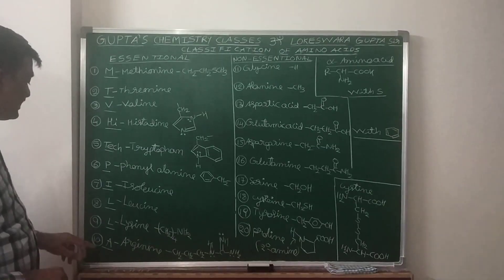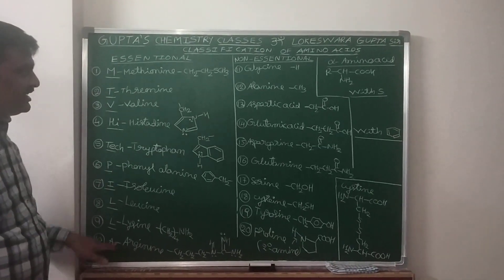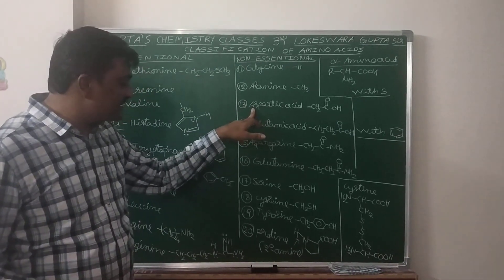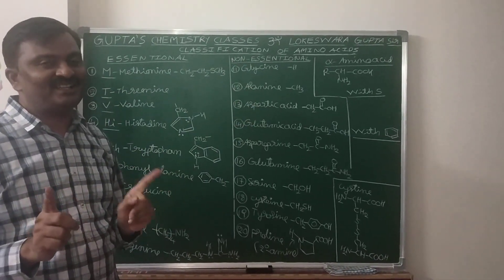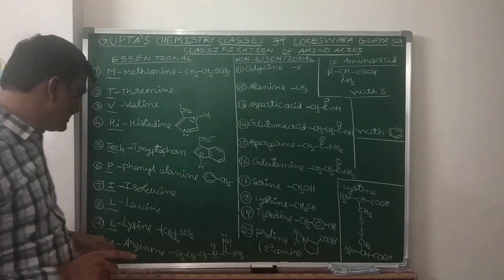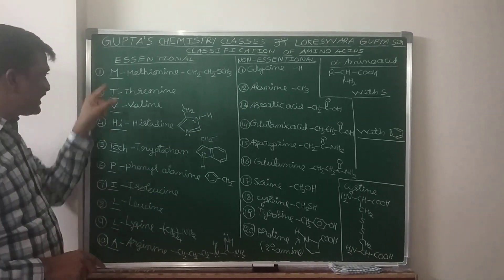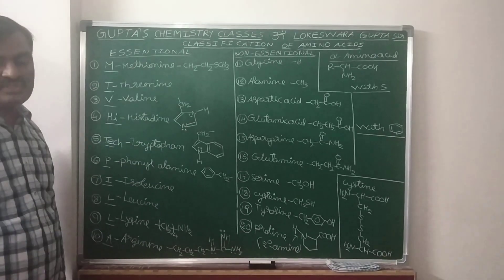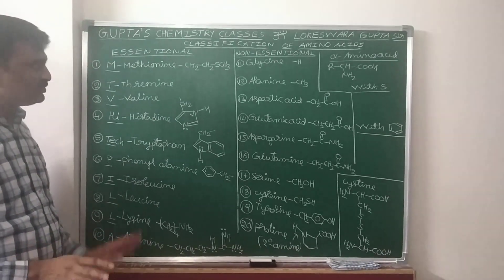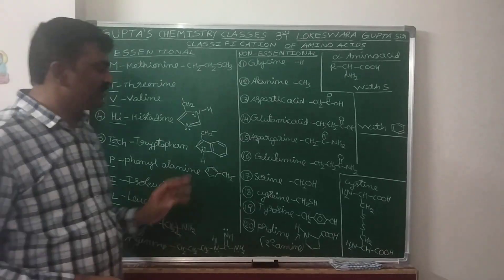Next, starting with letter A, not only Arginine. Aspartic acid and Alanine also there. But these are non-essential. This only essential. So along with MTV high-tech pillar shortcut, little bit of memory also you required.